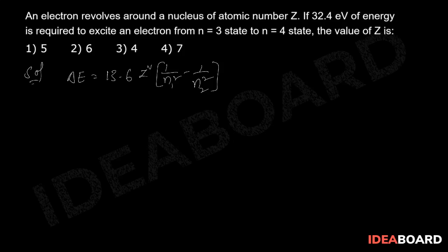required is 32.4 electron volts. Therefore, 32.4 = 13.6 × (1/3² - 1/4²). From this, here Z²: 32.4 = 13.6 Z²